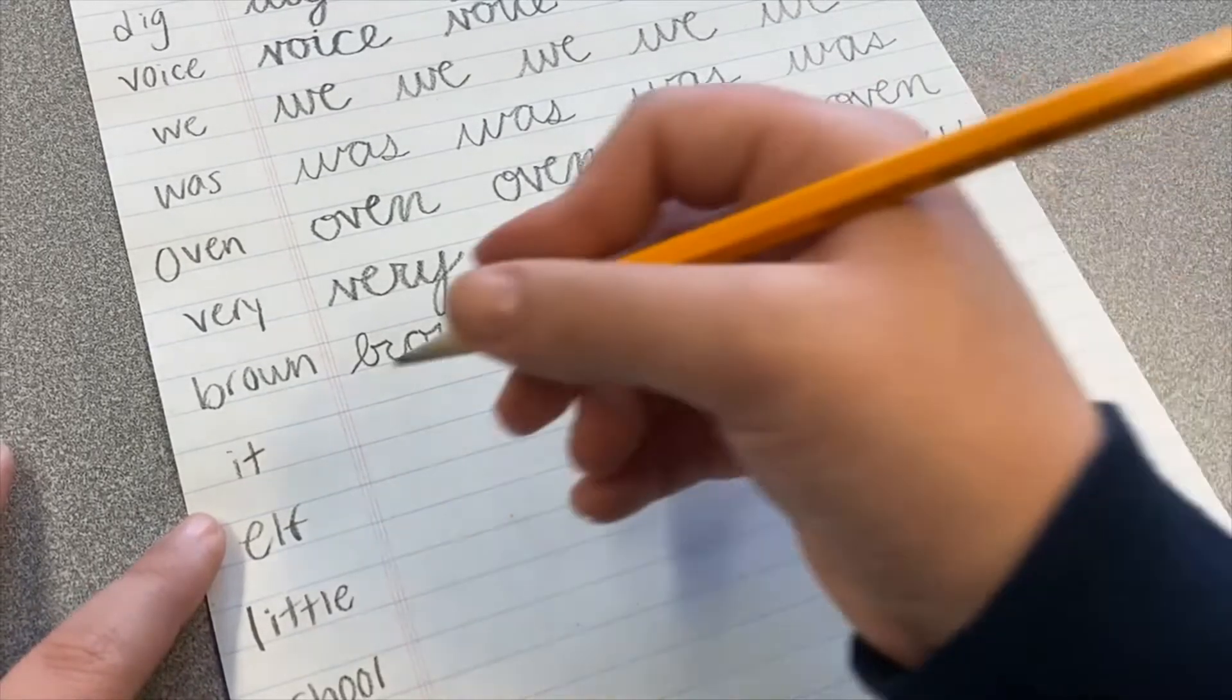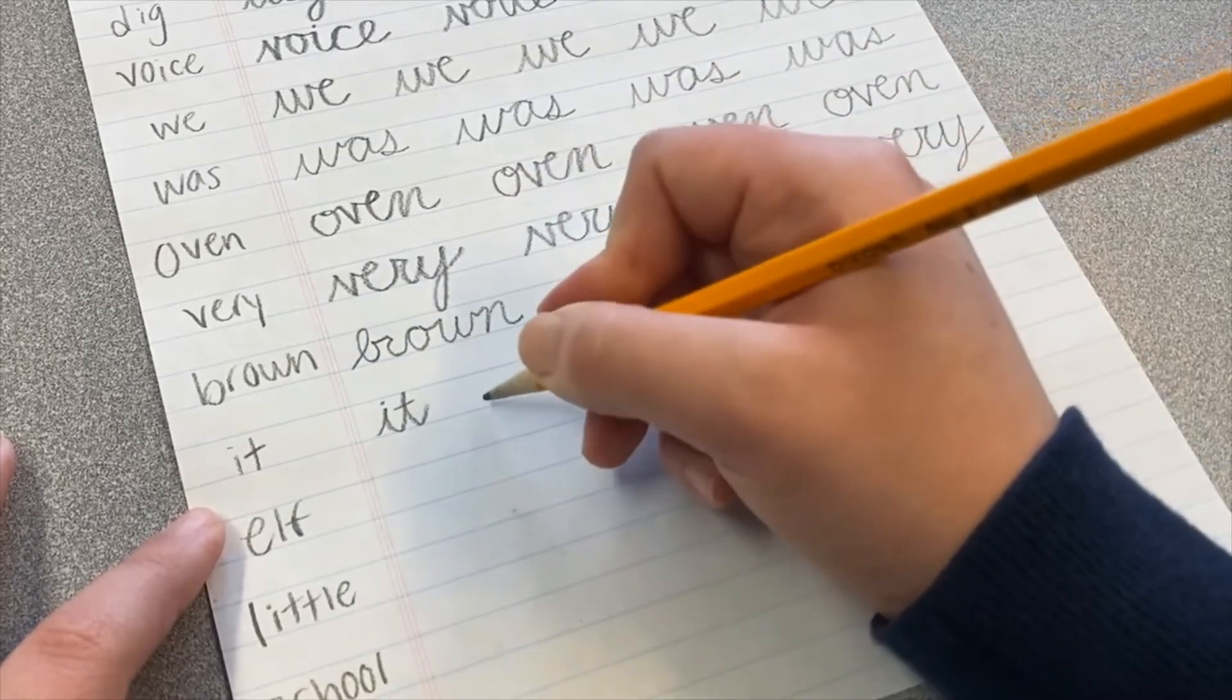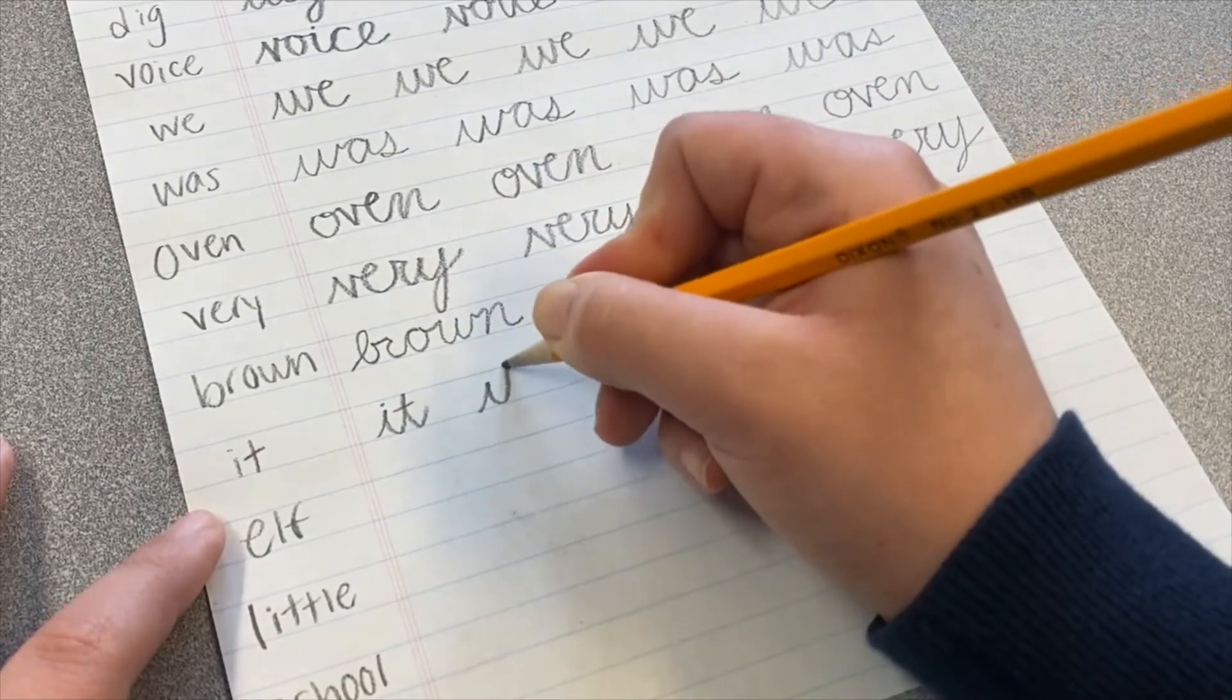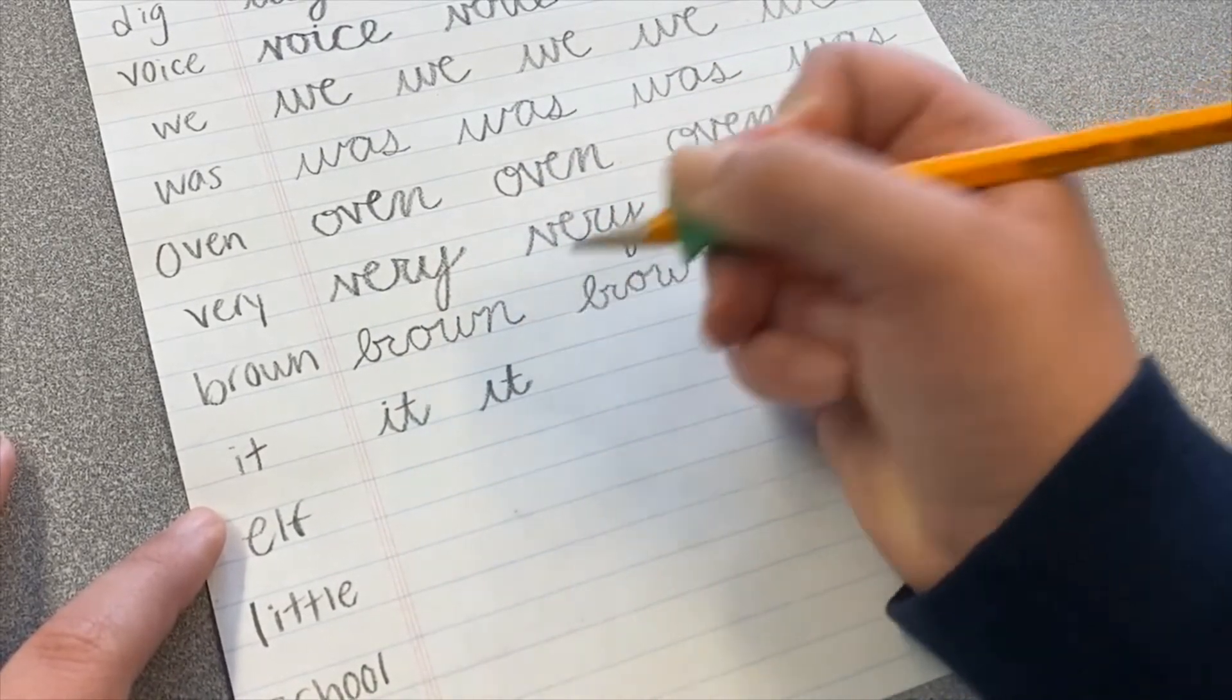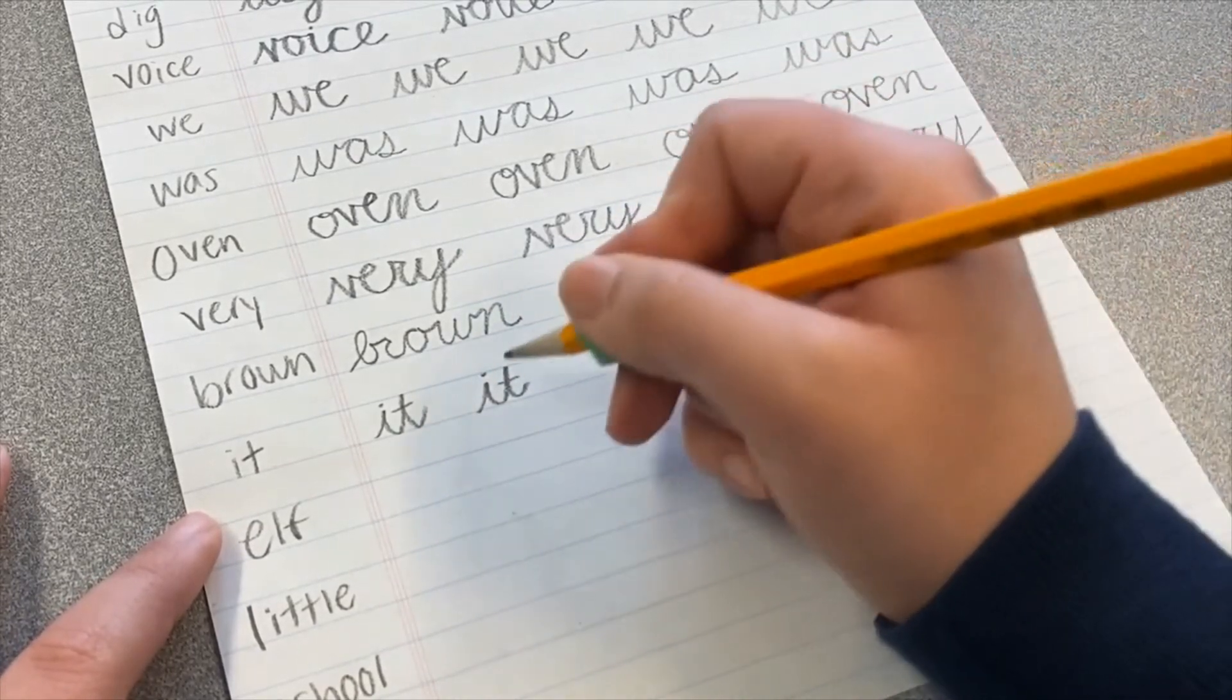The next word is the word it, I, T. You'll notice I put my line on my T first, and then I dot my I, so I go backwards.